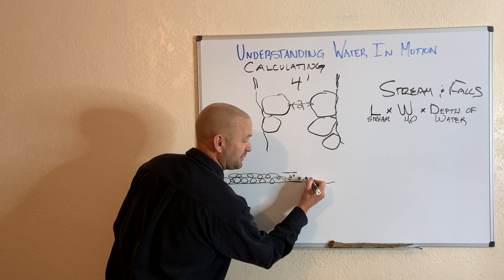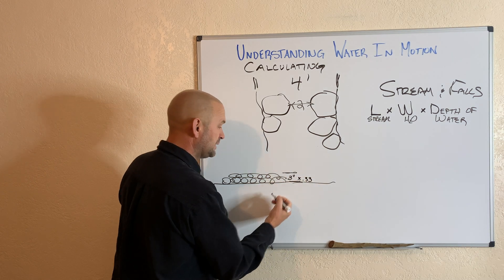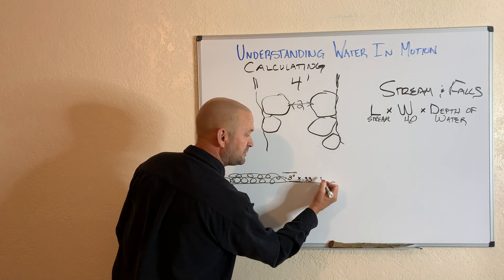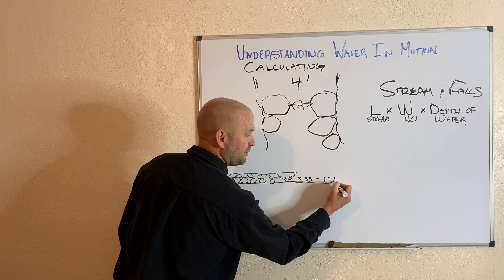We're going to say times 0.33, one third of that is water. So three inches of gravel equals one inch of water.